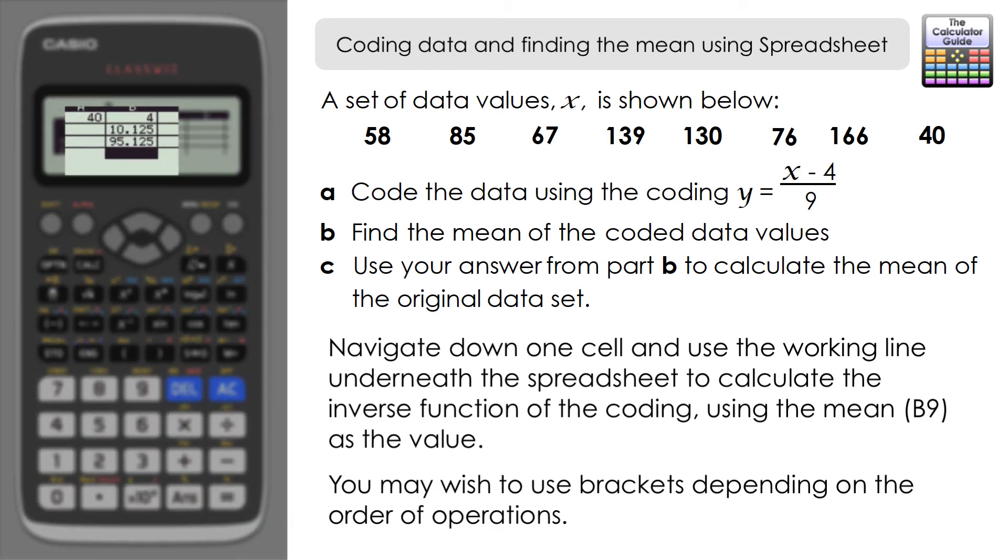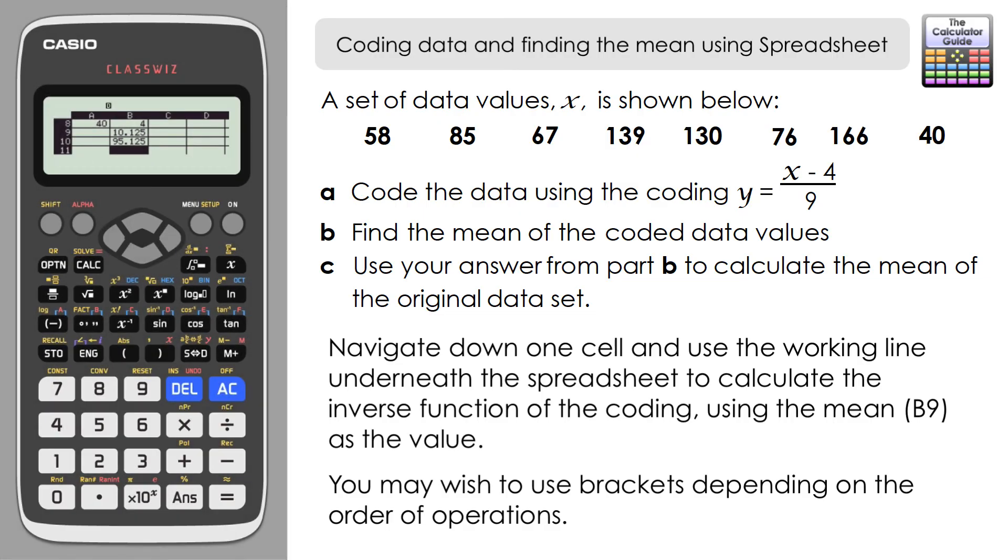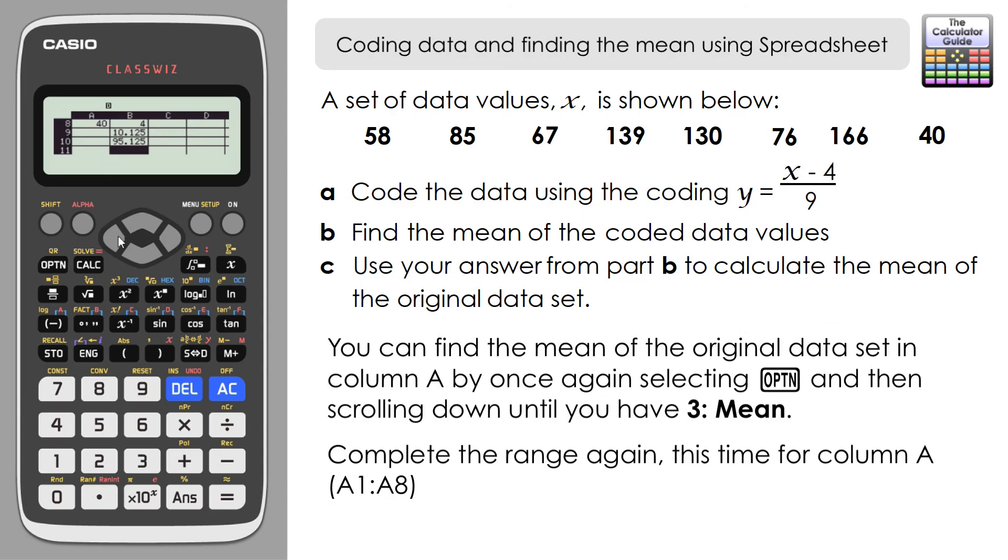Now I'm going to check that by using the mean feature from the spreadsheet mode, but this time in column A with our original data set. I'll navigate to cell A9, then it's option and navigate down until we get to this menu. We want option three for mean.